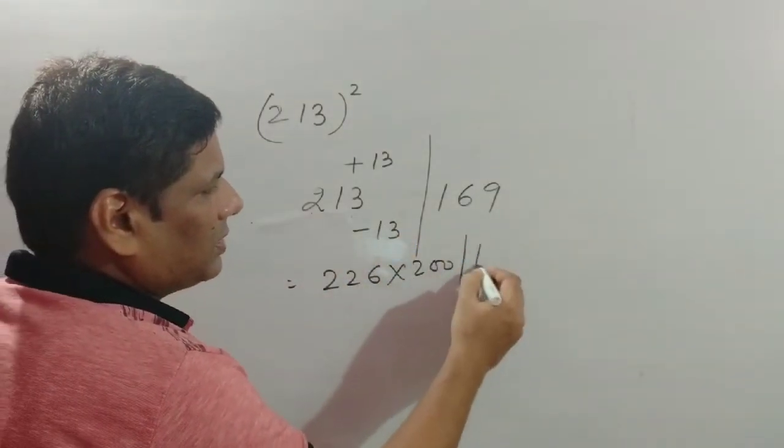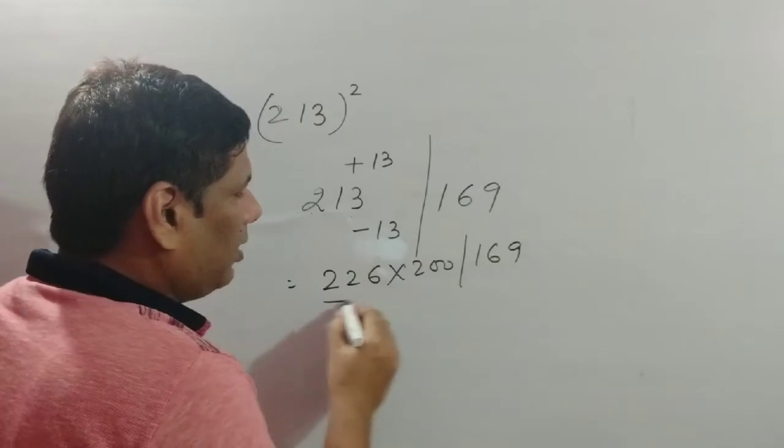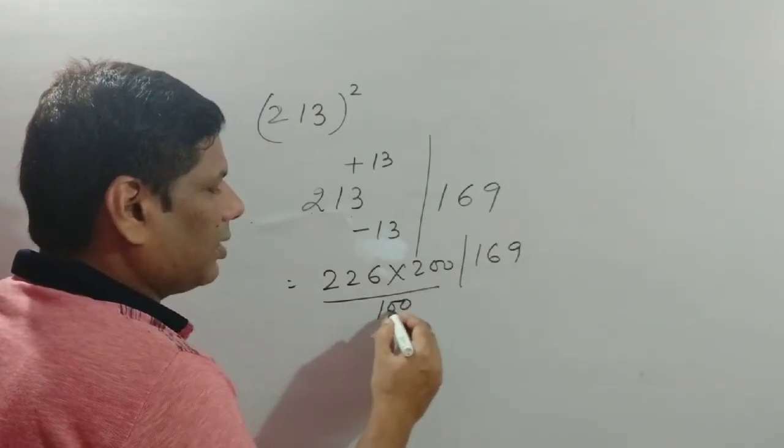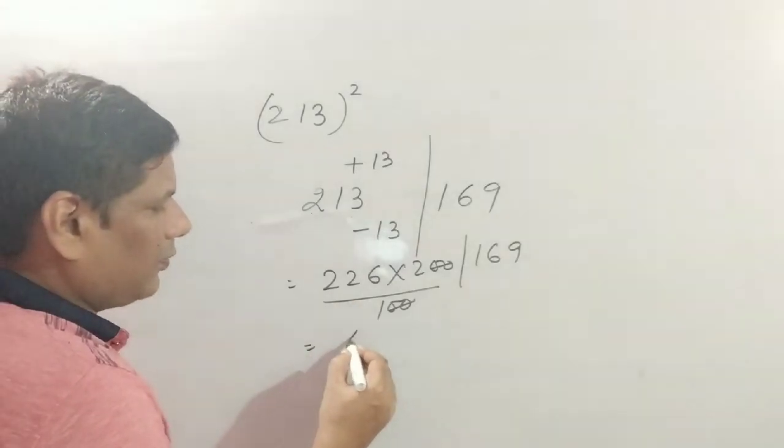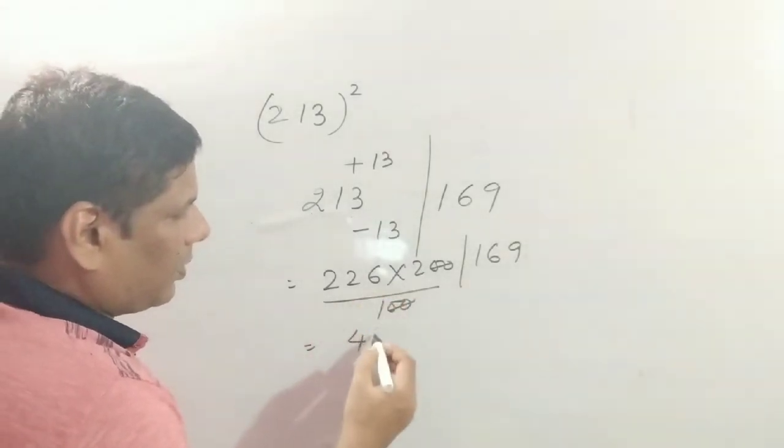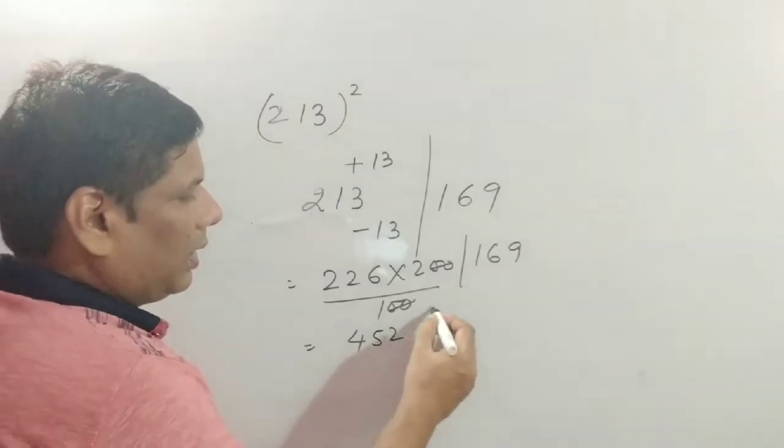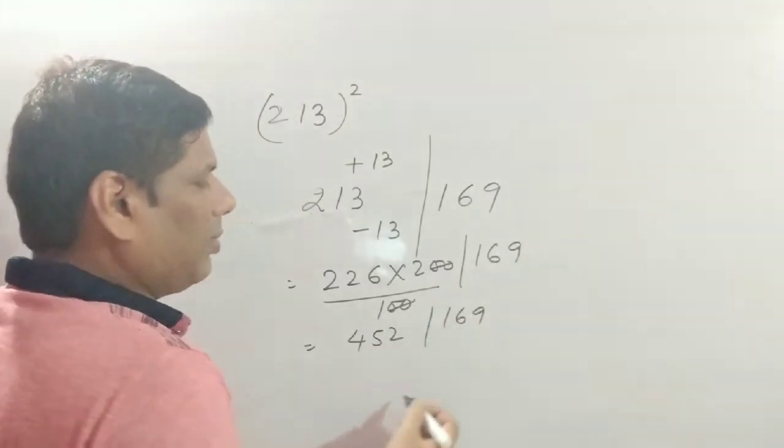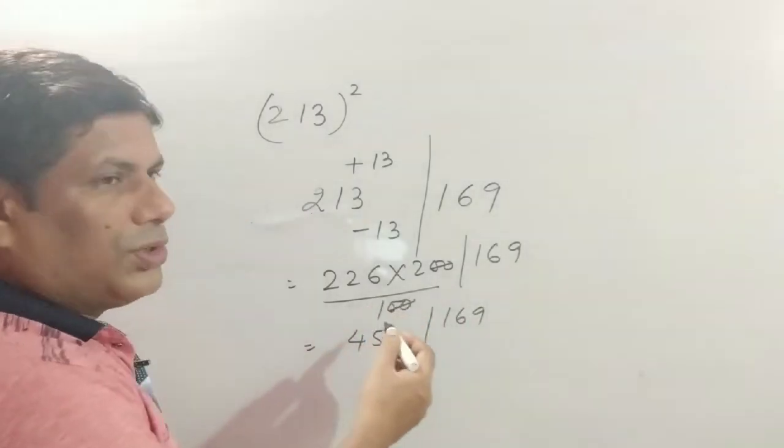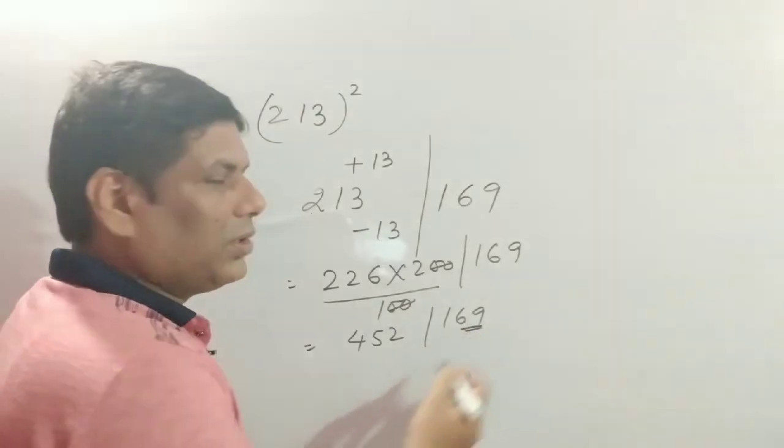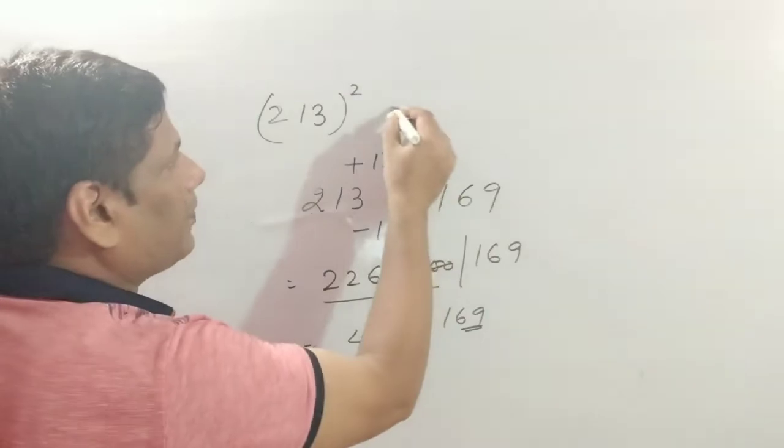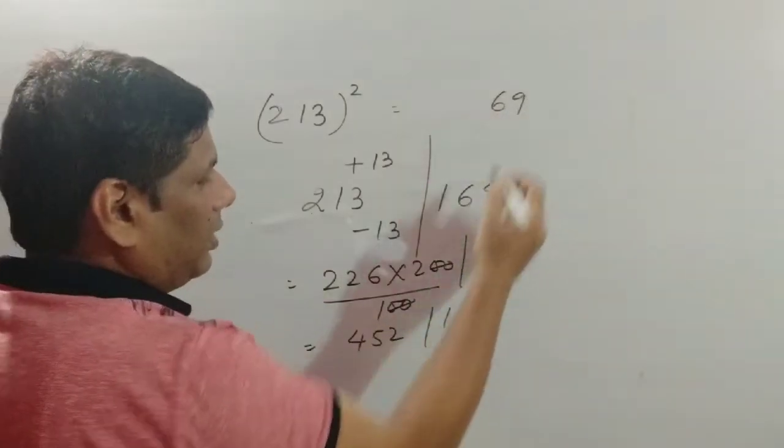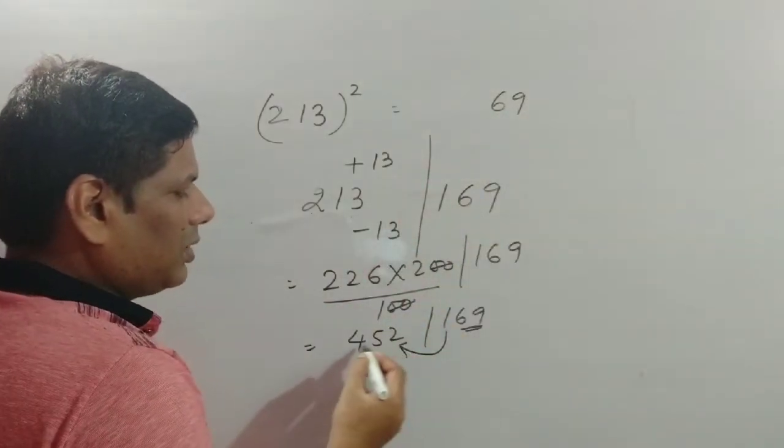Now 213 plus 13 is 226, minus 13 is 200, and 13 squared is 169. Divide this number by 100, which gives us 226 times 200 divided by 100 equals 452, and we have 169.